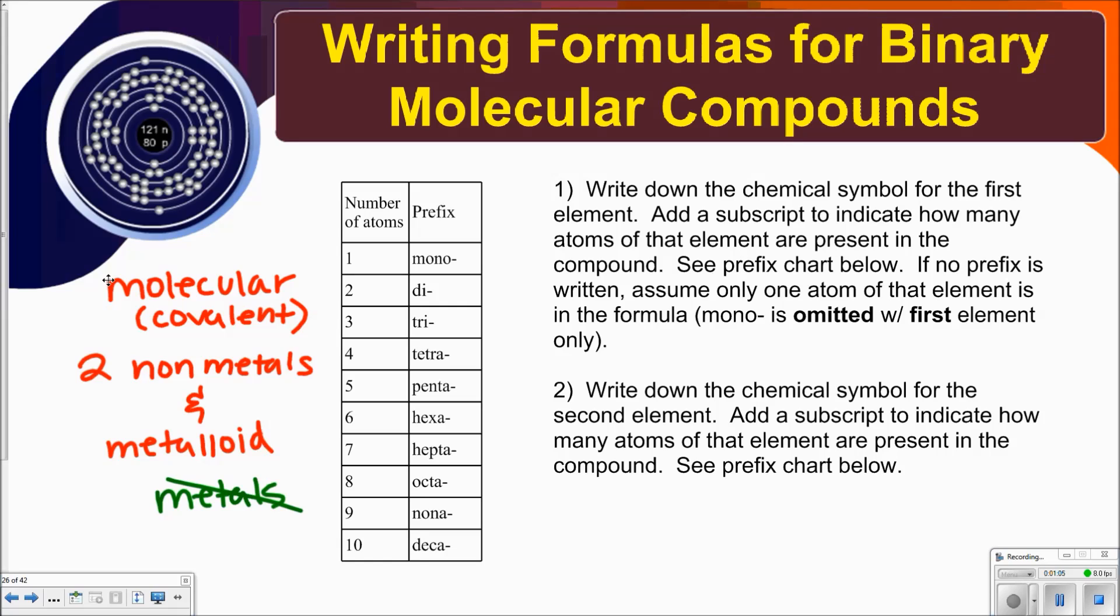The first thing you're going to do is write down the chemical symbol for the first element. You can add a subscript to indicate how many atoms of that element are present in the compound. See the prefix chart below. If no prefix is written, assume only one atom of that element is in the formula. Mono is omitted with first element only.